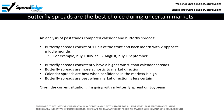I have completed extensive analysis on past trades comparing calendar and butterfly spreads. Butterfly spreads consist of one unit of the front and back month with two opposite middle months. For example: buy 1 July, sell 2 August, buy 1 September.